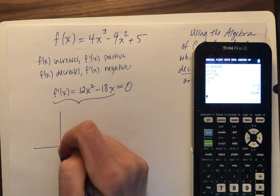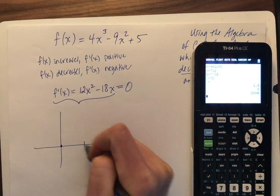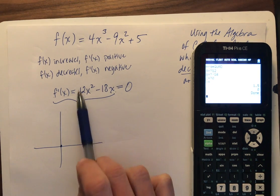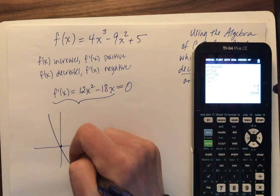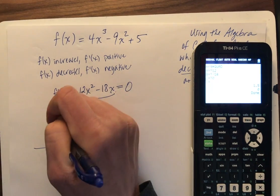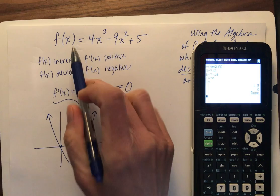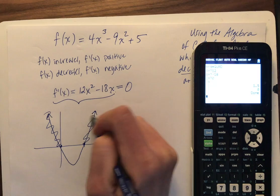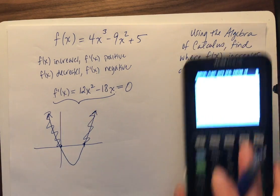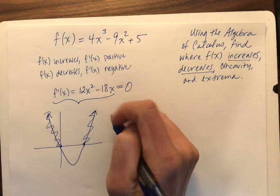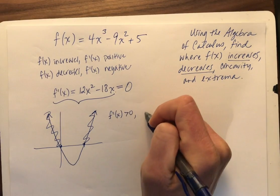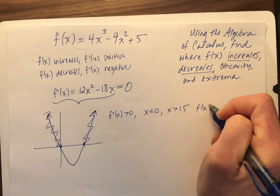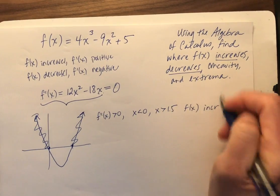So f'(x), 1.5 and zero are my zeros. I know this quadratic opens up because I've got a 12, a positive 12. So I'm just going to make a sketch of f'(x). It's something like this. So where is f(x) increasing? Well, wherever f' is positive. So that's all this stuff here. Positive, positive. So those squigglies, I'm going to move this calculator out of the way. Those squigglies happen. So f'(x) is greater than zero. When x is less than zero, x is greater than 1.5. f(x) is increasing. Boom.